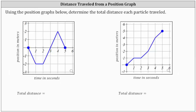Looking at the first graph, notice particle one starts at position zero and also ends at position zero, back at the starting position. Particle two starts at position zero but then ends five meters away in the positive direction. But again, this question is asking us to determine the total distance each particle traveled.